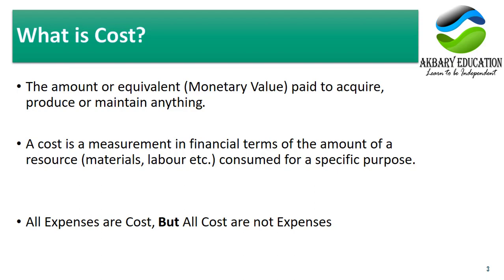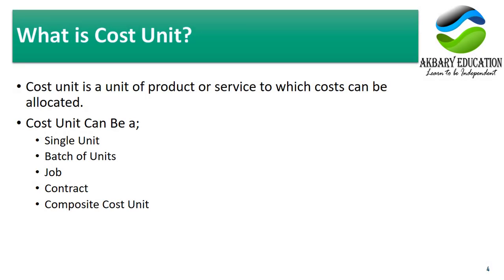What is a cost unit? A cost unit is a unit of product or service to which cost can be allocated. You need to find a unit — like a computer, a book, a building — to which you allocate your cost. For example, how much does it cost to study mathematics, or how much does it cost to produce a mobile phone?